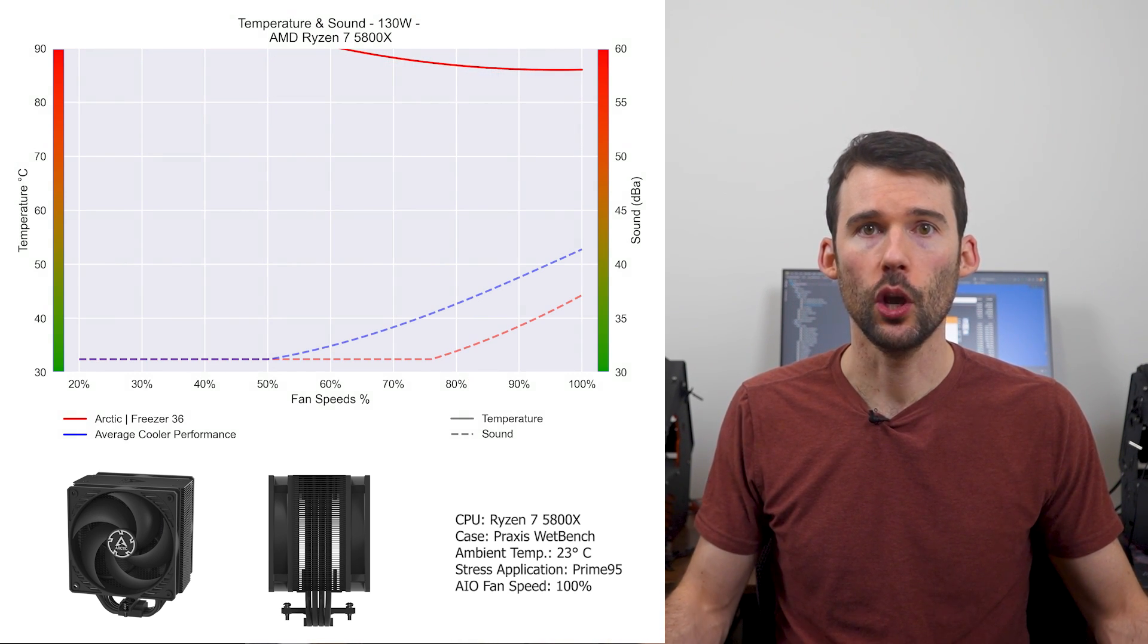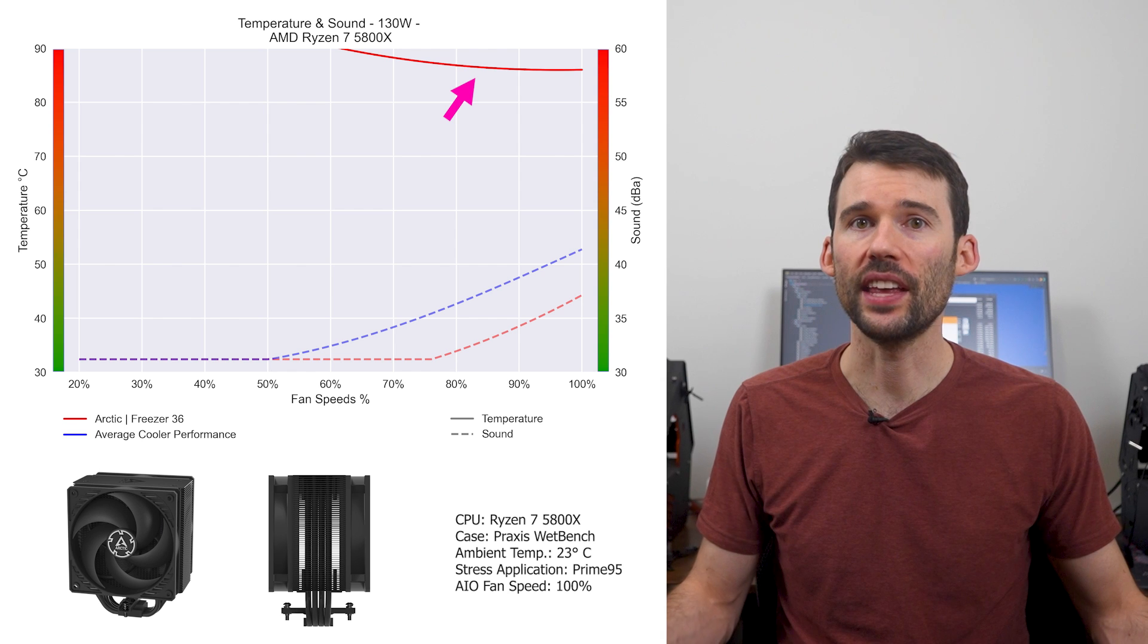When we push the CPU to 130 watts, we can see that this cooler can handle the loads of the higher RPMs, while the average cooler cannot.